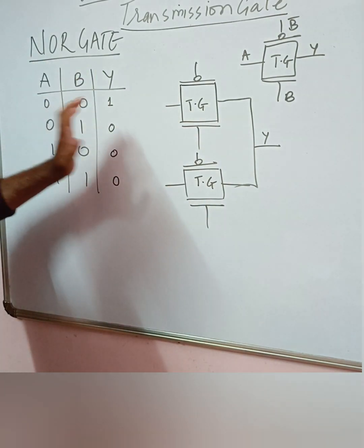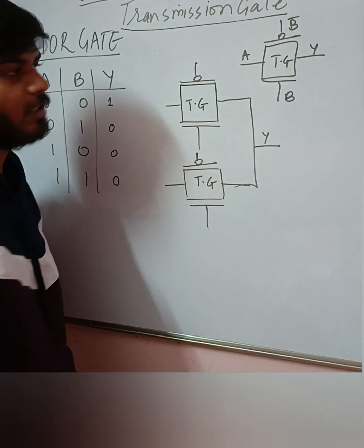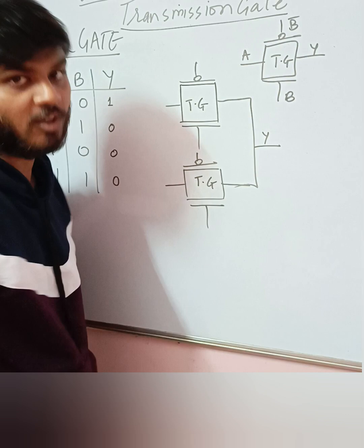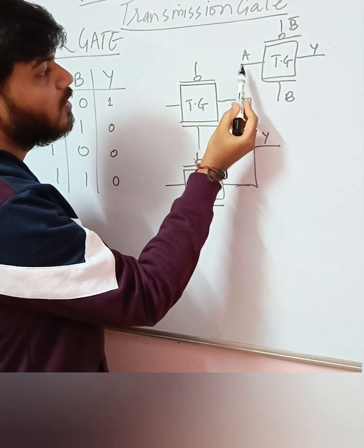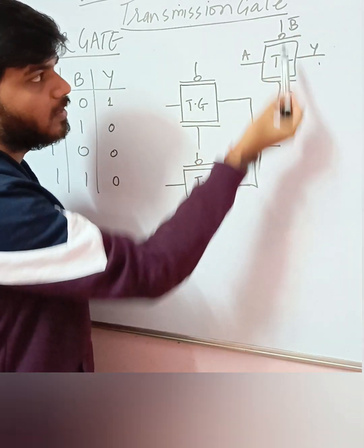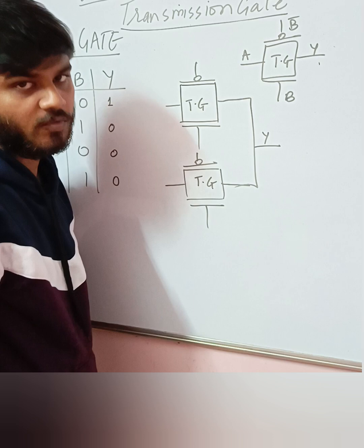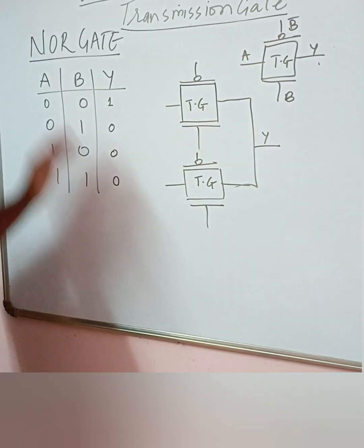Now in this video, we're going to learn how to construct a NOR gate using the transmission gate. As I told in the previous video, this is a basic logic diagram of a transmission gate where we have the input A and output Y, and you have the control signal B which helps in the activation of the transmission gate. Now here you have an input NOR gate.